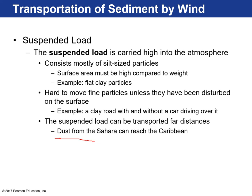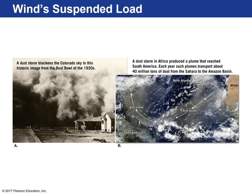Dust from the Saharan Desert can move across the entire Atlantic Ocean and be deposited in the Caribbean — in fact there are deposits that reach Florida. It's estimated about four million tons of dust from the Sahara go to the Amazon basin annually. During extreme drought in the 1930s dust bowl era, winds picked up a lot of dust and created these crazy storms.